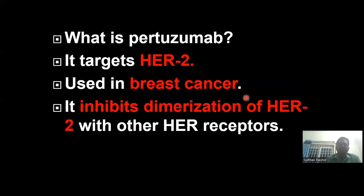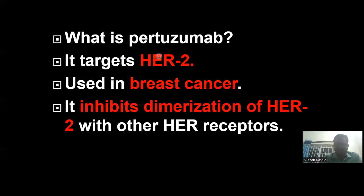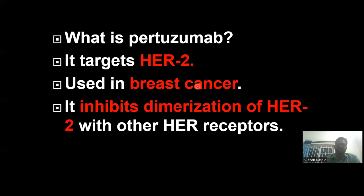Now comes pertuzumab. It targets HER2 receptors, like trastuzumab — both are targeting HER2 receptors. So pertuzumab is used in breast cancer, just as trastuzumab is used in breast cancer. In its mechanism, pertuzumab prevents the dimerization of the HER2 receptor with other HER receptors.